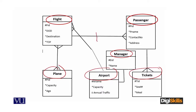Flight to passenger: as stated in the scenario, in a flight there will be more than one passenger. If we use a dotted line, we assume it might be that in a flight no passenger exists. But the requirement says one passenger should be on a flight for it to be a flight, so the line should be solid, not dotted. One flight can have one or more passengers, and one passenger is part of exactly one flight.